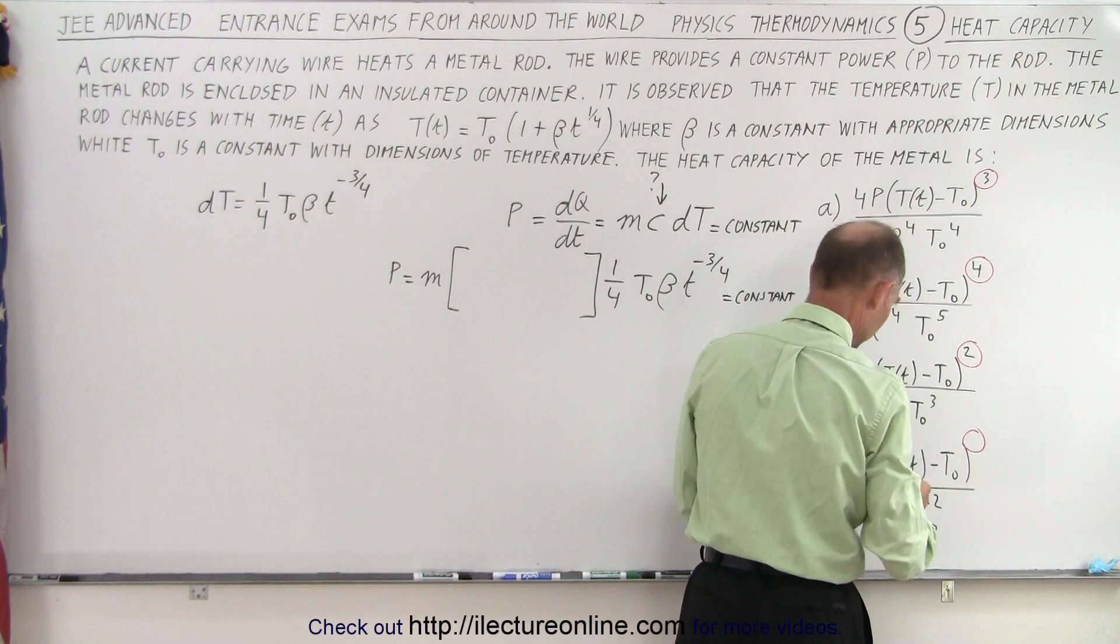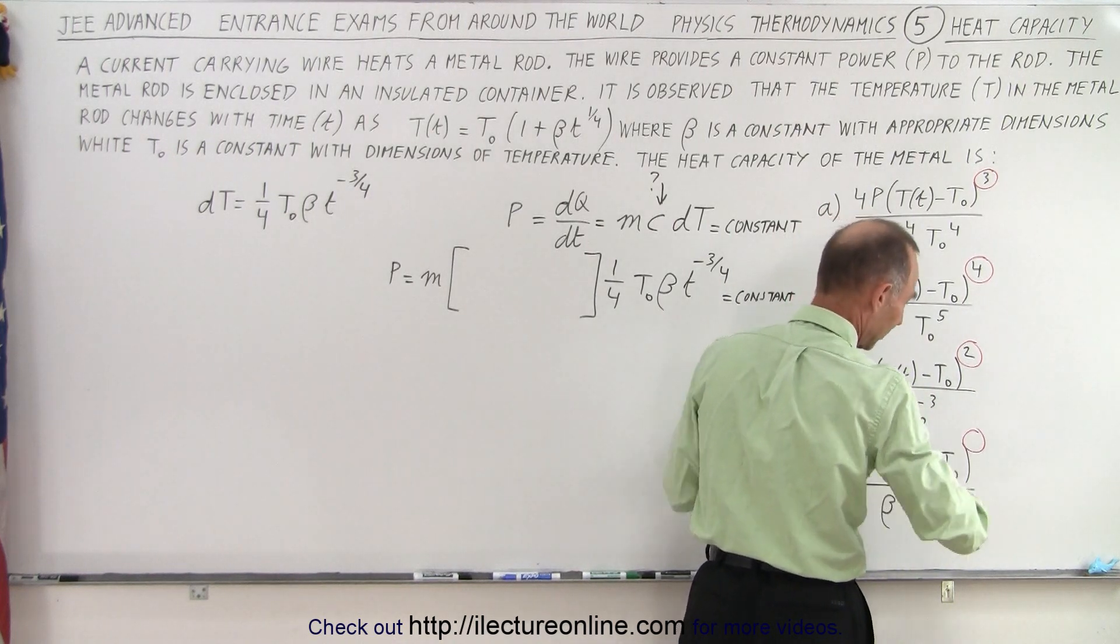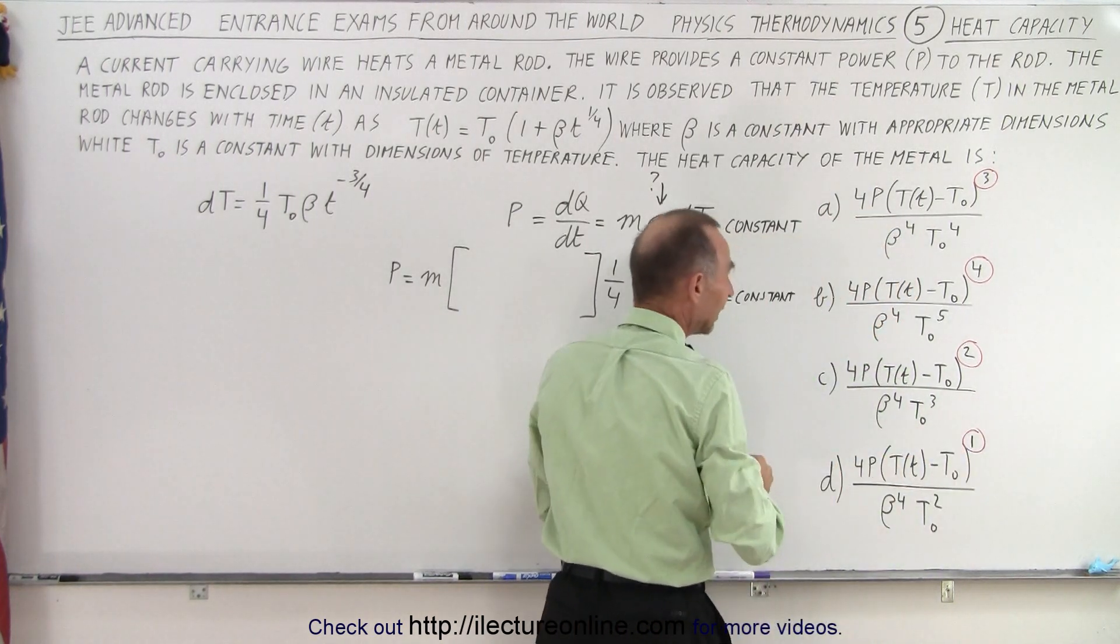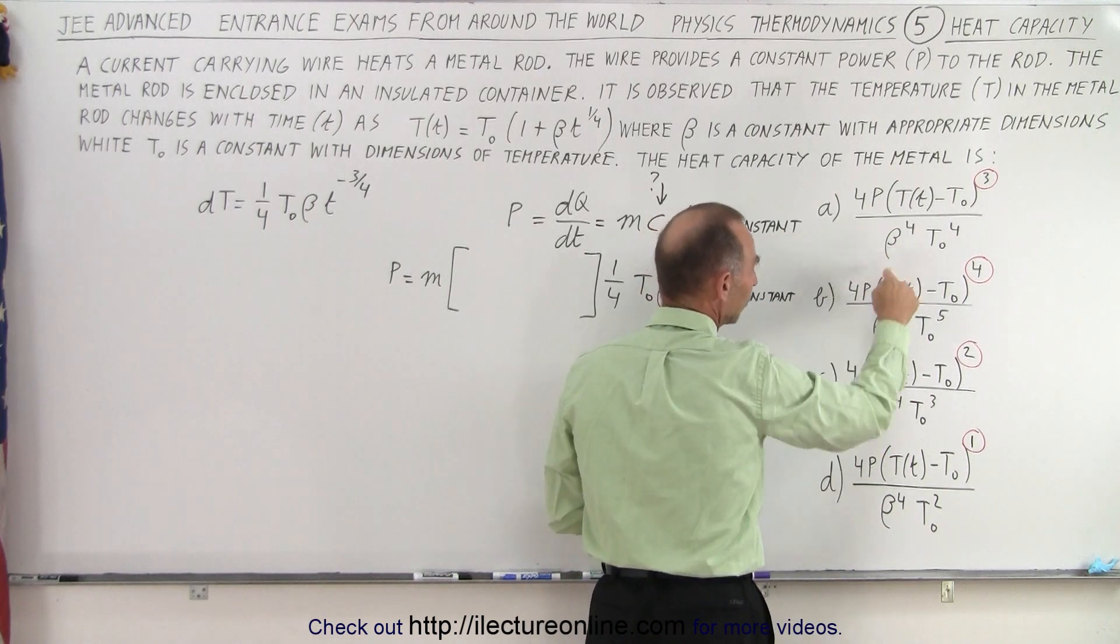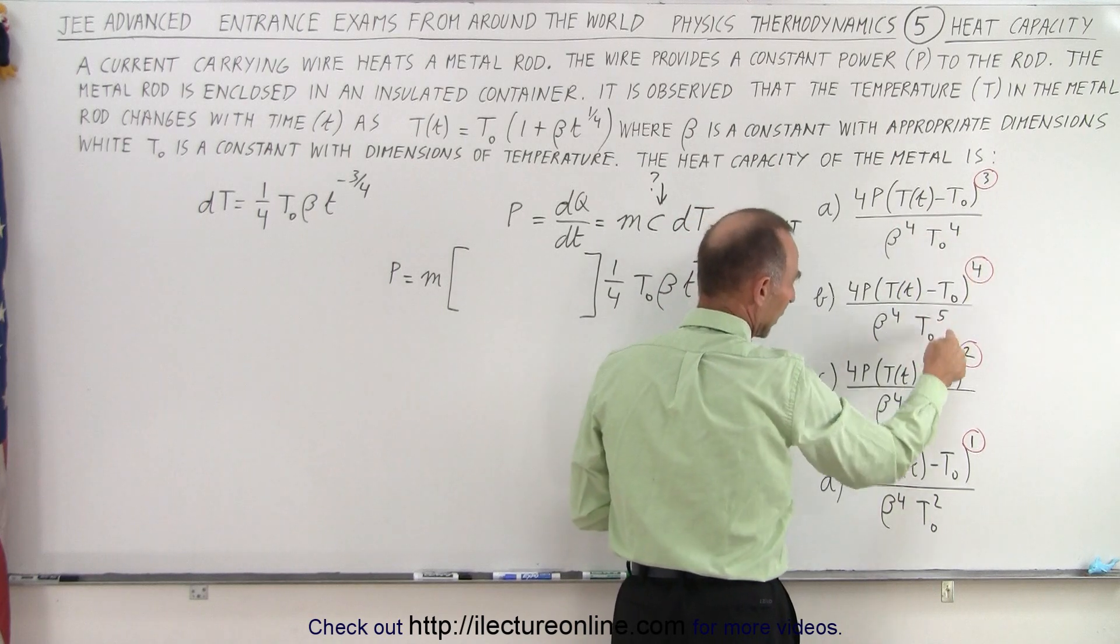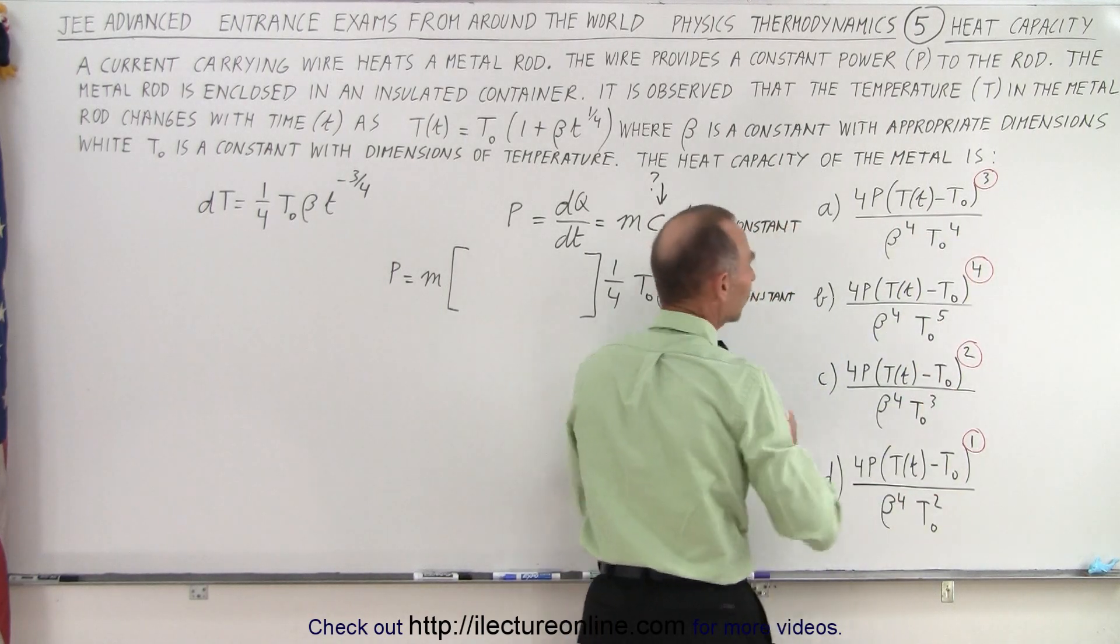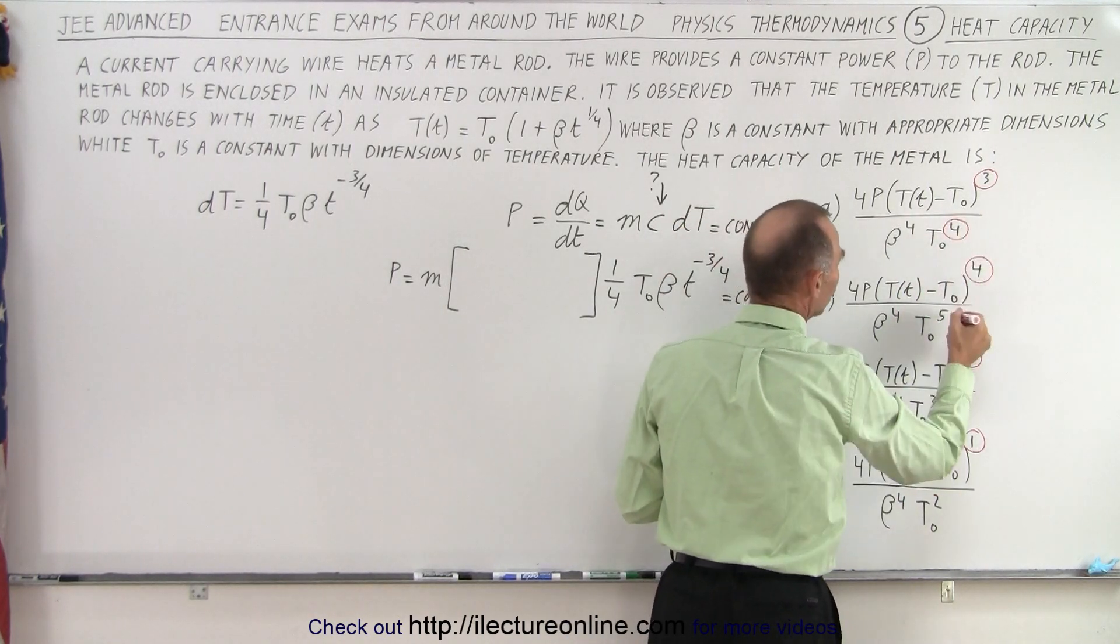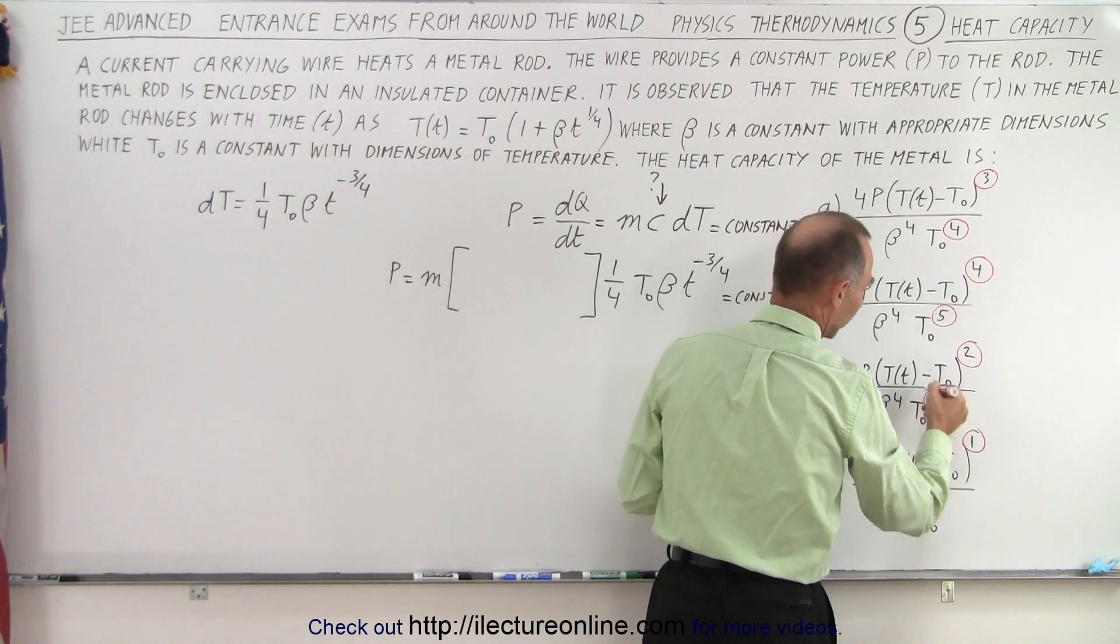And then there's of course that would be a one in this case, it's not written specifically but that would be a one. And then in the denominator I have beta to the fourth power, that's the same everywhere, and T sub naught to the fourth power, to the fifth power, to the third power, to the second power, so that changes as well. So the only thing that changed in the answers are those two exponents.